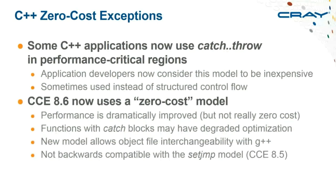The developers noticed C++ programmers are now using try/catch blocks in performance-critical contexts — not just for IO failures but in hot paths where the old implementation was expensive. They changed the implementation to be much faster. This is also another reason CCE 8.6 is incompatible with 8.5: if you mix binaries from the two compilers you'll get mismatched runtime routines or strange error messages. The new implementation is also compatible with g++, giving object file interchangeability between CCE C++ and g++.